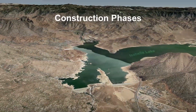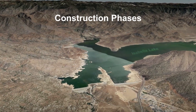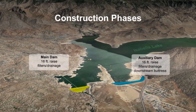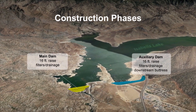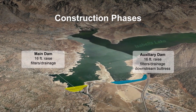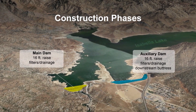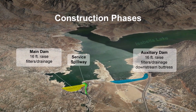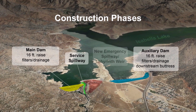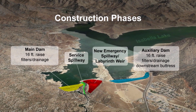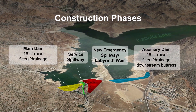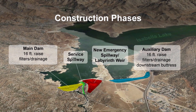Construction will consist of four main parts: raising the main and auxiliary dams 16 feet, adding filter and drainage on the downstream slope of both dams, improving the stability of the existing service spillway, and creating an additional 300-foot-wide emergency spillway and labyrinth weir.